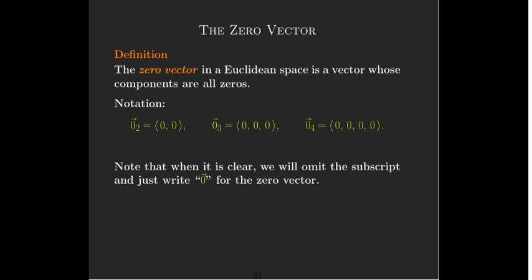But if the context is clear, then we're just going to omit the subscript. Many times I'll do that. I'll just put zero with an arrow above it to indicate the zero vector.